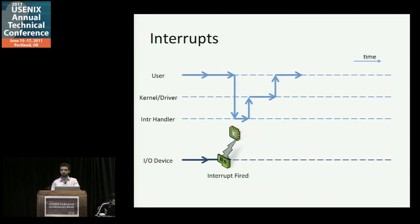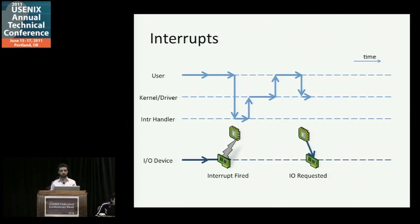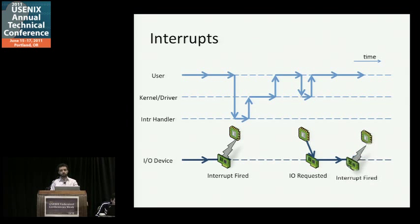The kernel will do some work and you end up back at user level. Now, suppose that this user program wants to actually do an I/O. We'll come back into the kernel, eventually into the driver, and as a result of probably some PCI register writes, the I/O will be requested. The user application execution returns to user mode, and there's parallel execution of the I/O request and the user application. At some point in time, the I/O is completed and the whole cycle repeats itself. Really simple.